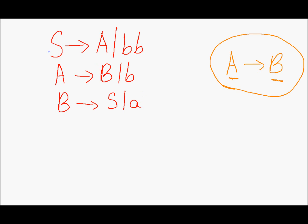We have three unit productions: symbol S produces symbol A, then we have A produces B, and we have B produces symbol S.